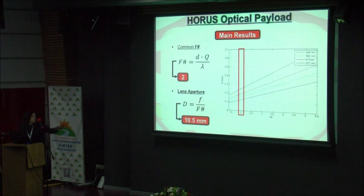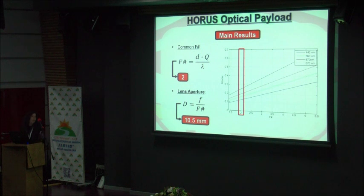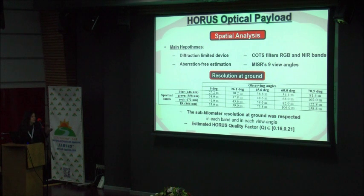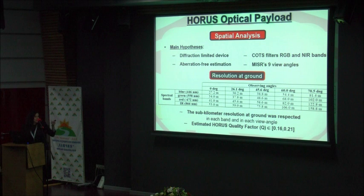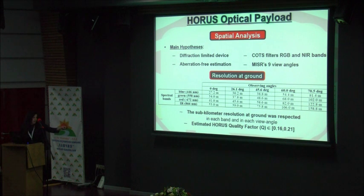These are the main results for the optical quality factor. We estimated that the needed lens aperture will be around 10.5 millimeters. For the resolution at the ground, these are all the resolutions estimated for all angles and bands, and for all cameras the requirement of sub-kilometer resolution is satisfied. The quality factor is within the range of the MISR.